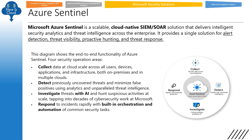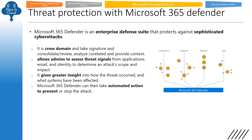Azure Sentinel is important — definitely know the definition. For operational areas, it: collects data, detects previously uncovered threats, investigates threats with AI, and can respond to incidents with built-in orchestration and automation. Those four points you need to remember about Azure Sentinel. Microsoft 365 Defender connects with application, endpoint, identity, and data — all four you need to remember. It is cross-domain, and it can take automated action to prevent or stop attacks.